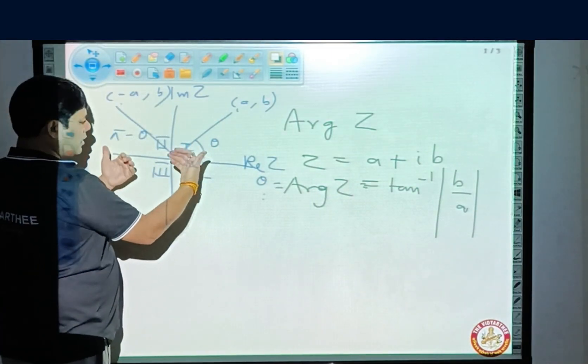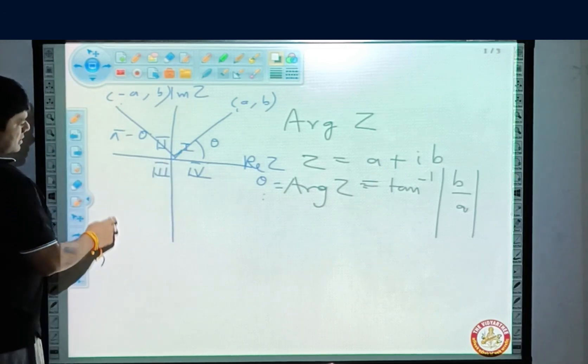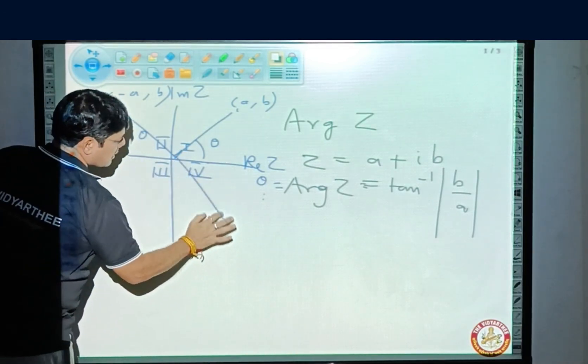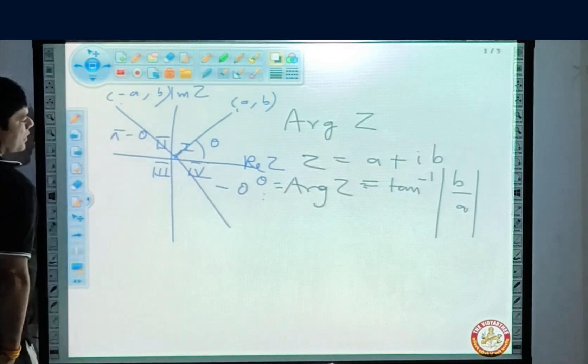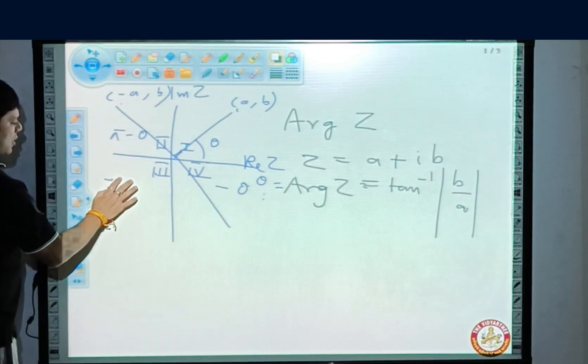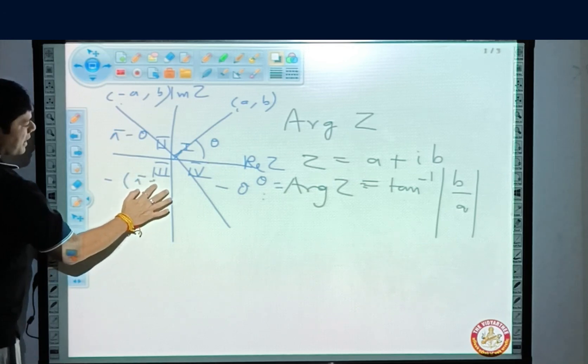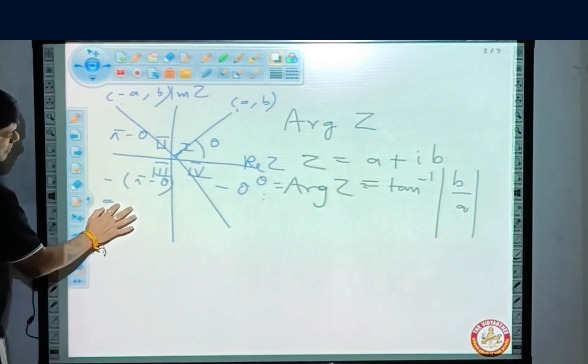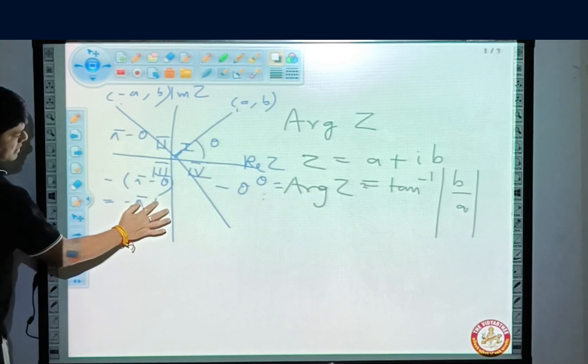Now, how to find out the argument for quadrant 4 and quadrant 3? Simple, put a minus of this. Here it will be minus theta. And in this case, it will be minus of pi minus theta, that is, minus pi plus theta.